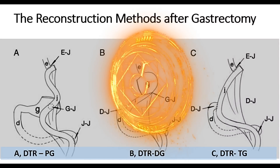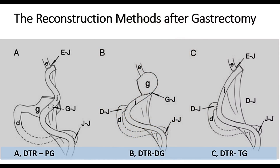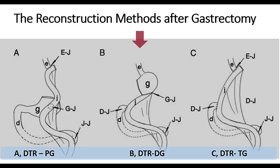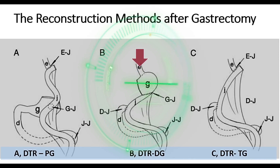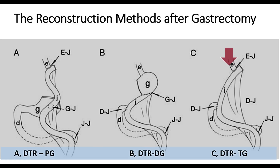Mainly, the reconstruction methods after gastrectomy are: Fig A shows double tract reconstruction after proximal gastrectomy, where we bring a loop of jejunum in a Roux-en-Y manner to esophagojejunostomy, gastrojejunostomy, and jejunojejunostomy. Fig B shows double tract reconstruction after distal gastrectomy in the form of gastrojejunostomy and jejunojejunostomy. Fig C shows double tract reconstruction after total gastrectomy in the form of esophagojejunostomy and jejunojejunostomy.